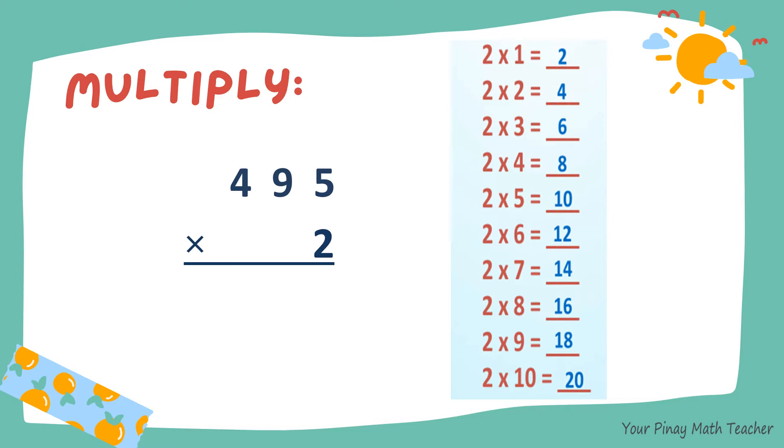Let's multiply 2 by 5. 2 times 5 is 10. So we put 0 below and carry 1 on top of 9. 2 times 9 is 18. Add 1 to 18, we get 19. 9 carry 1. 2 times 4, 8. Plus 1, 9. So the product is 990.